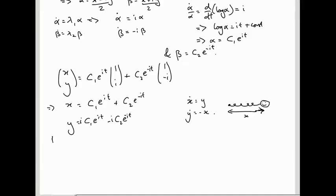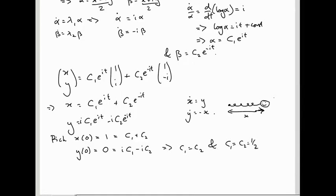So, let's pick some initial conditions. Let's suppose that at time 0 our particle is say a distance 1 from the origin and let's suppose its velocity at time 0, so y at 0, is 0 so that we hold the particle at position 1 and then let go of it. What does that mean? Well, if we substitute t equals 0 into this we get c1 plus c2 and if we substitute t equals 0 into this we get i c1 minus i c2. So the second equation is telling us c1 equals c2 and the first equation is telling us c1 equals a half.